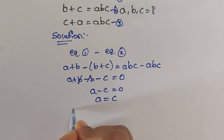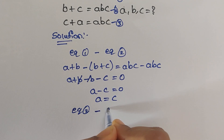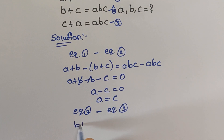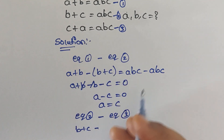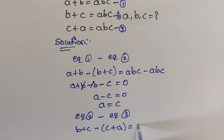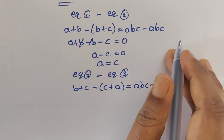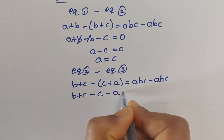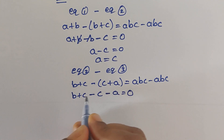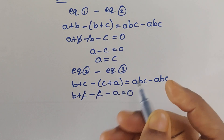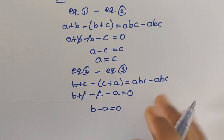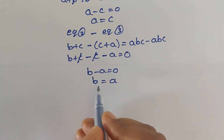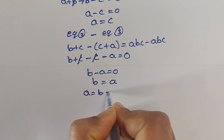Now we subtract equation 2 minus equation 3. So equation 2 (b plus c) minus equation 3 (c plus a) equals abc minus abc, which is 0. The plus c minus c gets cancelled, giving us b minus a equals 0, so b equals a. We now have a equals c and b equals a, which means a equals b equals c.